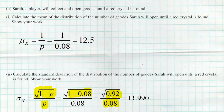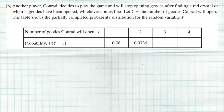They don't ask us to interpret these values, so we just need to calculate them. Now, another player, Conrad, decides to play and will stop opening geodes after finding a red crystal or when four geodes have been opened — so he's not going on forever. The table shows a partially completed probability distribution. The probability he gets a red crystal on his very first geode is 0.08. For two geodes, the first must not be red (0.92), then the second is red: 0.92 × 0.08 = 0.0736.